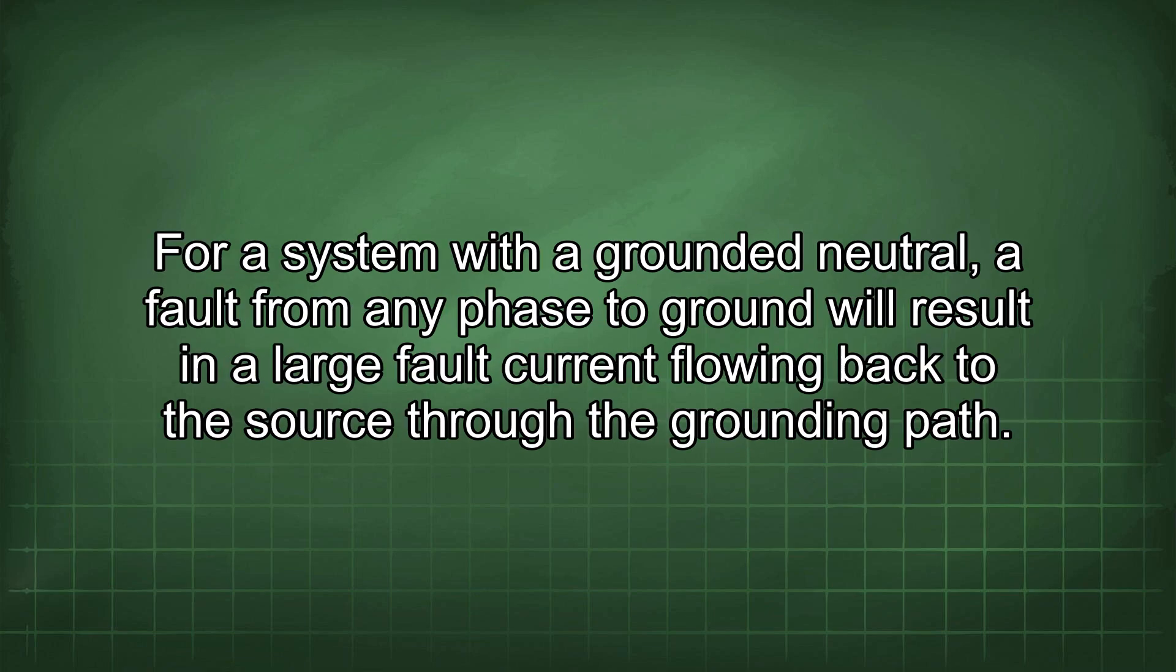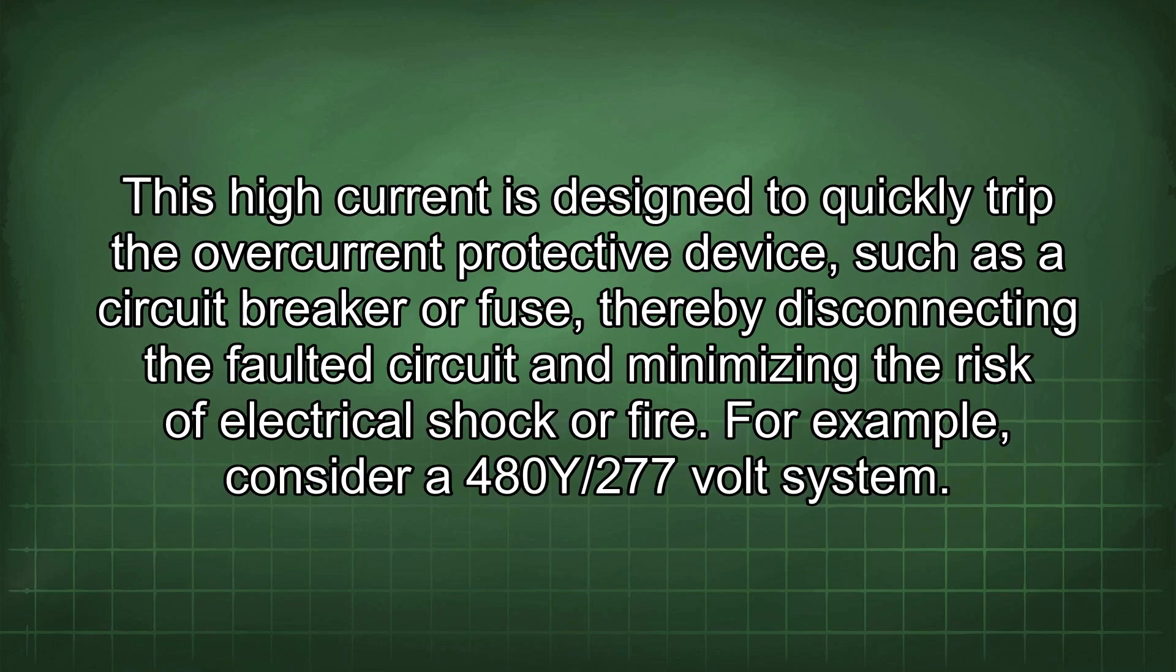For a system with a grounded neutral, a fault from any phase to ground will result in a large fault current flowing back to the source through the grounding path. This high current is designed to quickly trip the overcurrent protective device, such as a circuit breaker or fuse, thereby disconnecting the faulted circuit and minimizing the risk of electrical shock or fire.